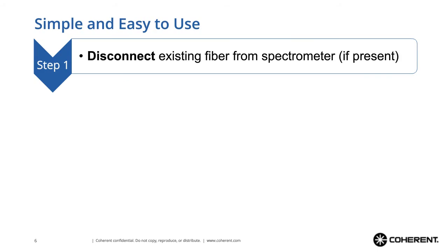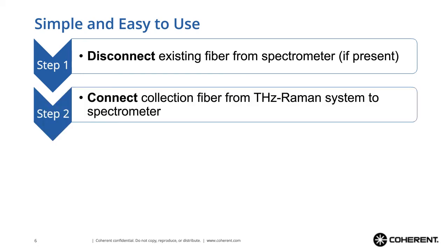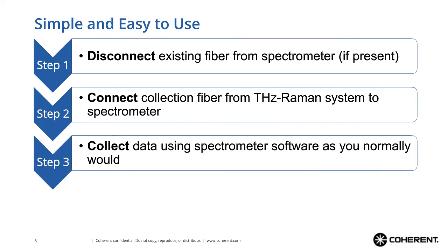So how easy is it to incorporate terahertz Raman into an existing system? Step one: disconnect the existing fiber from the spectrometer. Step two: connect the collection fiber from the terahertz Raman system to the spectrometer. Step three: collect data using the spectrometer software as you normally would. It's really that simple.